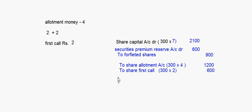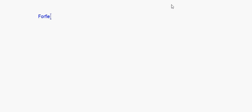Now let's take up a question where the forfeiture is done when the shares are issued at a discount. When shares are issued at a discount, the discount on issue of shares is a loss - so it will always be included in the forfeiture entry. In this case there is no question of whether it has been received or not, because the discount is already given to the shareholder.